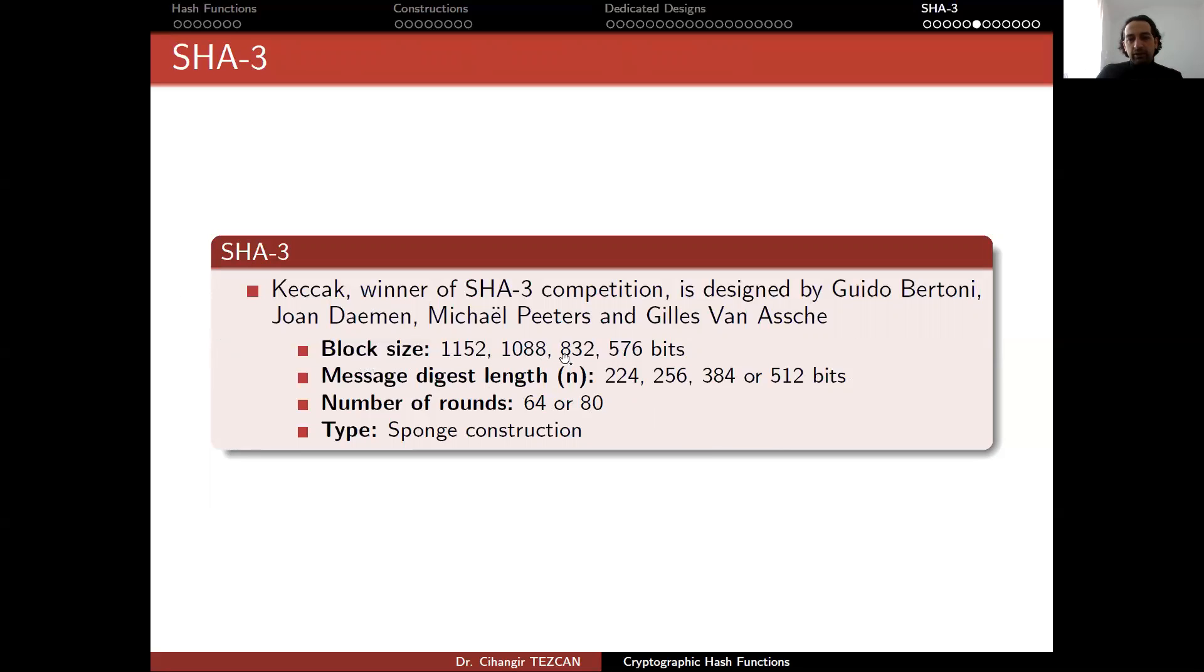Now as you can see, the block size is really big. This is mainly because it is a sponge construction. We have a huge internal state. It will absorb the message and then we will squeeze it and produce the output. The message digest length is the same as SHA-2. This was a NIST requirement because if we wanted to replace at some point SHA-2 with SHA-3, there would be different algorithms with the same message digest length. Instead of using SHA-2 with 256, we would move on to SHA-3 with 256 bit output. Number of rounds, again, depends on the message digest length. But the difference is that it is a sponge construction.